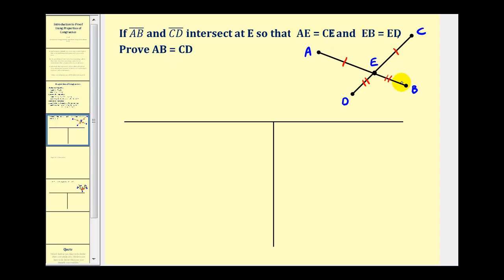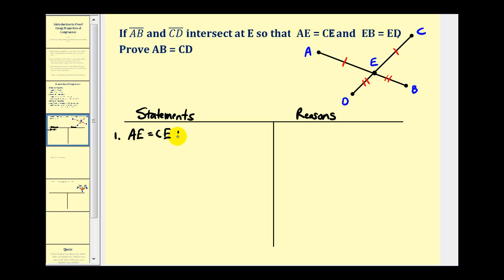We want to prove that AB is equal to CD. For a two-column proof, we'll list the statements on the left that will lead to our desired proof of AB equals CD, and on the right we'll give our reasons or justifications. So for number one, we always state the given information: AE is equal to CE, and EB is equal to ED. The justification is that it's given.